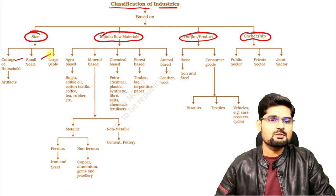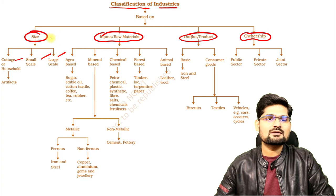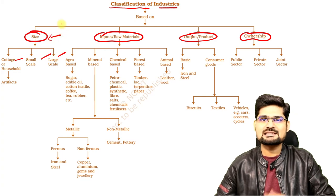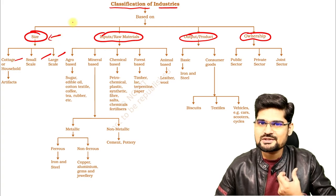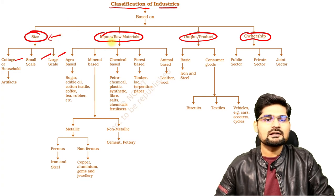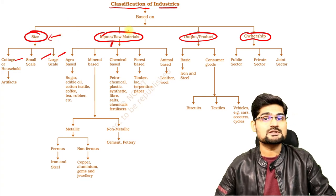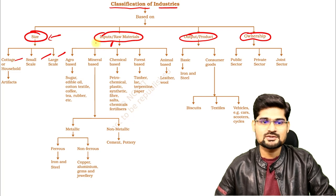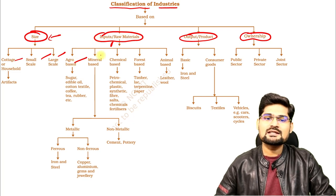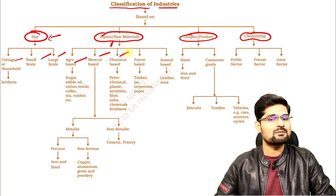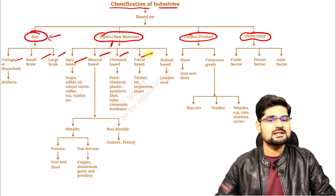On the basis of size, industries are classified as cottage, small scale, and large scale. In terms of inputs — industrial inputs as factors of production — we have agro-based, mineral-based, chemical-based, and forest-based industries. Metallic and non-metallic mineral-based industries are also included.